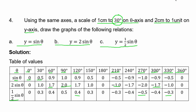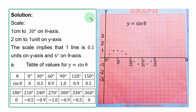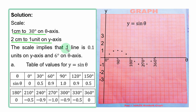We are to plot the first function y = sin θ. The given scale is 1 cm to 30 degrees on the theta axis and 2 cm to 1 unit on the y-axis. This means one small line is 0.1 units on the y-axis and 6 degrees on the theta axis. So 2 cm = 1 unit on the y-axis; the next 2 cm becomes 2.